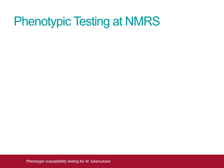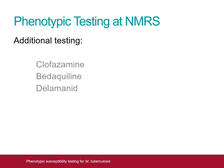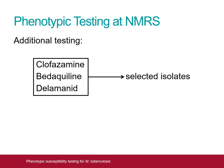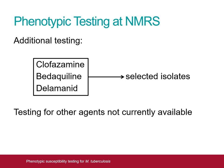A frequent query to the NMRS regards the availability of testing for additional agents. While susceptibility testing for clofazimine, bedaquiline or delamanid are not currently available routinely at the NMRS, they are available through the Cryptic research study. Selected isolates may be eligible for submission to this study following discussion of the case with NMRS clinicians and on the British Thoracic Society MDR-TB forum. At present, testing for more rarely used agents such as thiacetazone or the combination of meropenem and clavulanic acid are not available, as there are currently no accepted techniques or standards for such tests.